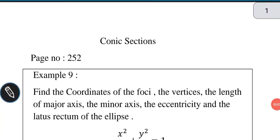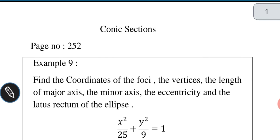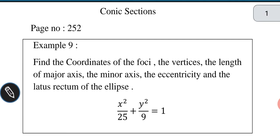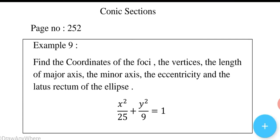Find the coordinates of foci and vertices, the length of major axis, the minor axis, the eccentricity, and the latus rectum of the ellipse: x squared by 25 plus y squared by 9 equal to 1.